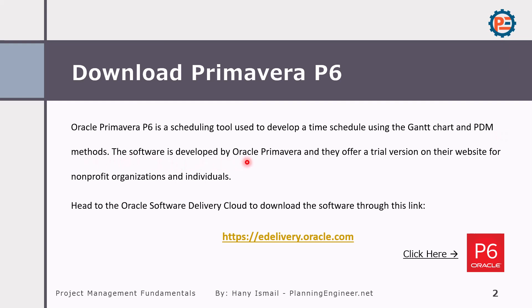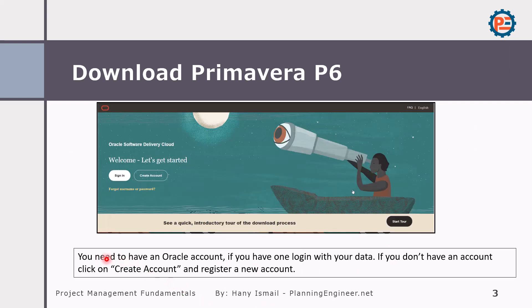The software is developed by Oracle and they offer a free trial version on their website for non-profit organizations and individuals. So simply go to their website. You need to have an Oracle account. If you have one, login with your data. If you don't have an account, click 'Create Account' and register a new account. Please note that the activation of your account might take some time, so I recommend you to do this step as early as possible in order to follow up the course.